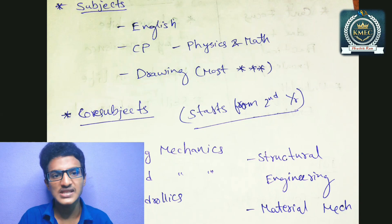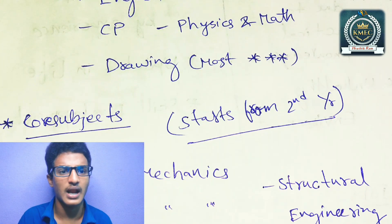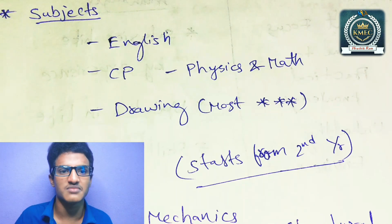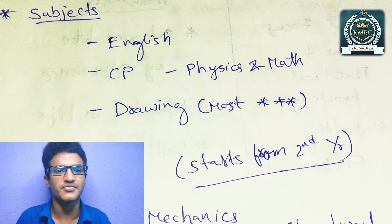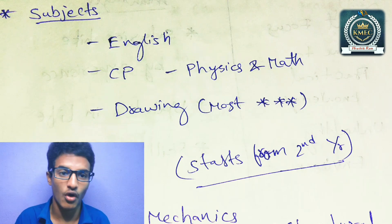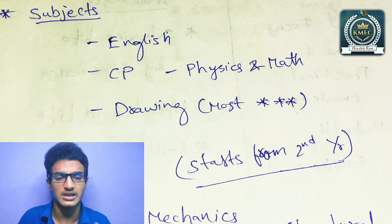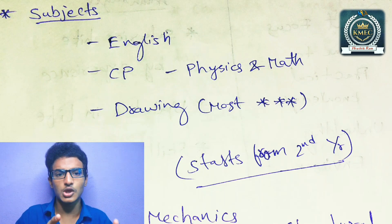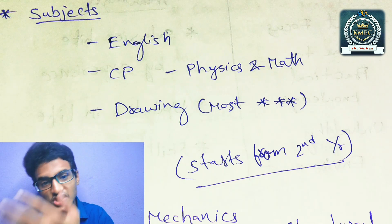In the first year, you are going to study subjects like English, CP (computer programming), physics, and maths related to coding. Also, engineering drawing is most important for civil engineering aspirants — it covers geometrical structures and systematic drawings used in infrastructure and design.